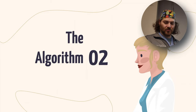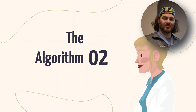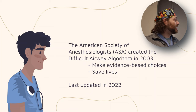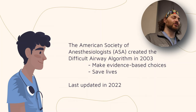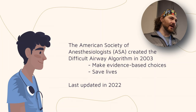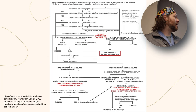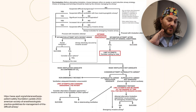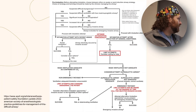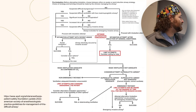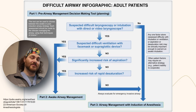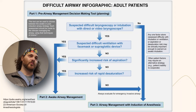Now the difficult airway algorithm. The American Society of Anesthesiologists created this around 2003; it gets updated as we learn more, and was last updated recently. It doesn't apply to pediatrics — this is all adults. The old algorithm starts with: do we think we're going to have a problem? Then you decide between an awake or asleep intubation. If you're doing an asleep intubation and things fail, you go into the lower half, which is basically things going sideways. The new 2022 algorithm is similar but more refined.